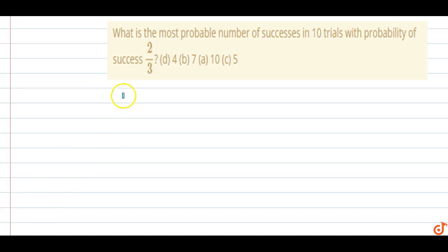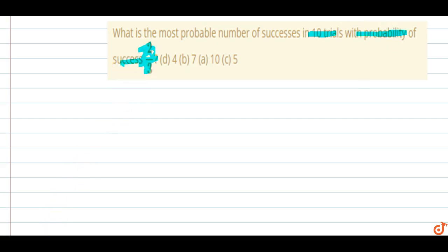In this question, what is the most probable number of successes in 10 trials with probability of success 2/3? So the most probable number of successes in each trial, the probability of success is 2/3.